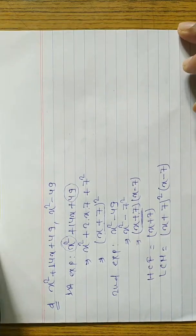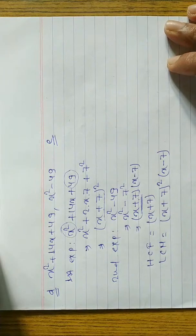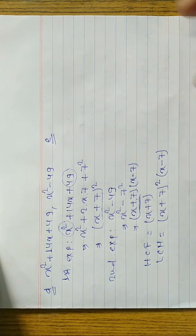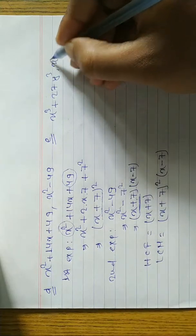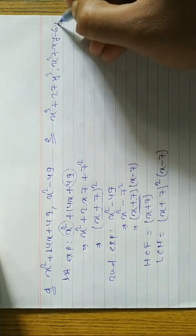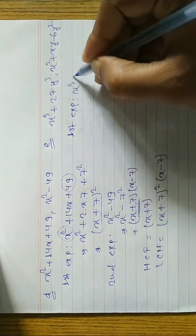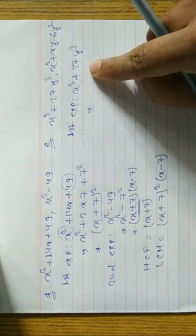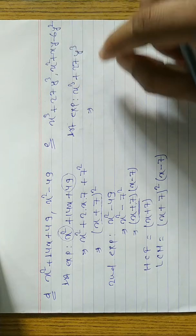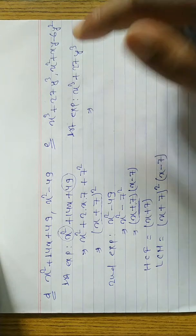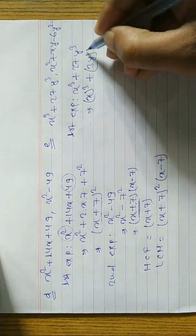Please ignore the background noise. Now look at question 2e. The first expression is x³ + 27y³ and the second is x² + xy - 6y². For the first expression, we convert to a³ + b³ form: x³ + (3y)³, since (3y)³ = 27y³. Using the formula a³ + b³ = (a + b)(a² - ab + b²).